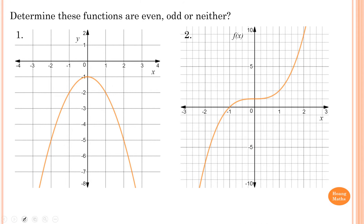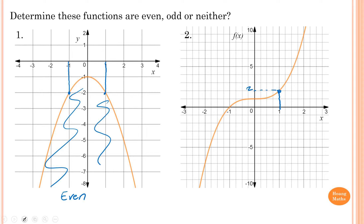For example, determine whether these functions are even, odd, or neither. First one: if x is 1, y equals negative 2, and if x is negative 1, y also equals negative 2. So it is even — symmetrical about the y-axis. Second question: when x is 1, y equals 2, and when x is negative 1, y equals 0. So f(1) is 2 and f(-1) is 0, therefore the function is neither.